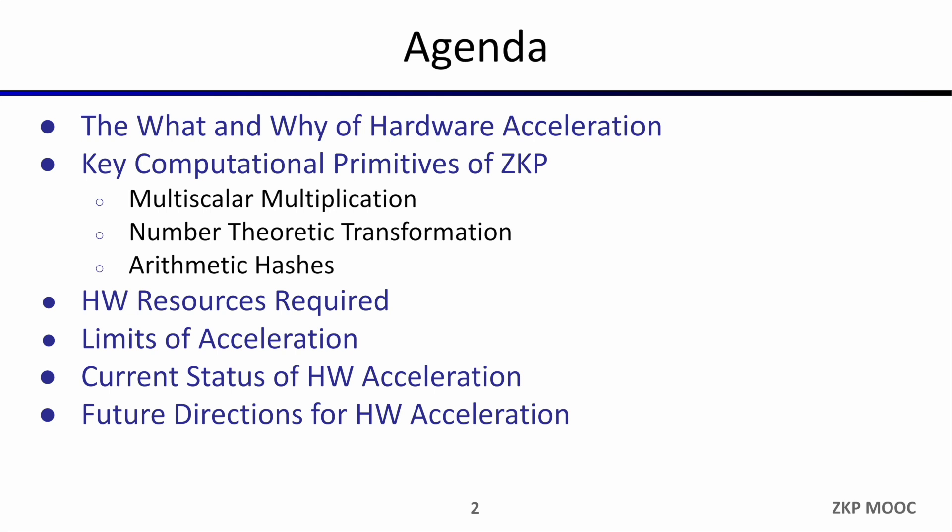We'll also include a brief discussion on the required hardware resources needed to perform these computations. We'll then follow this up with a discussion on some of the limitations of hardware acceleration, and finally conclude with a summary of the status of ZKP acceleration today as well as a brief discussion of promising future directions for improving proof generation performance.